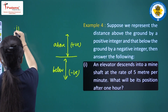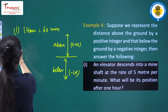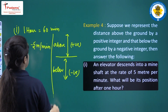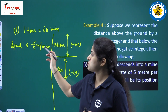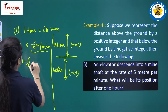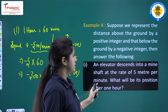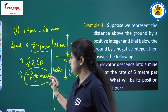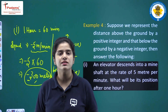First part: 1 hour equals 60 minutes. The speed of the elevator is minus 5 meters per minute — minus because the elevator is descending. In 1 hour, the elevator will descend by minus 5 into 60 equals minus 300 meters. The position of the elevator after 1 hour will be below the ground level by 300 meters. This was the first part.